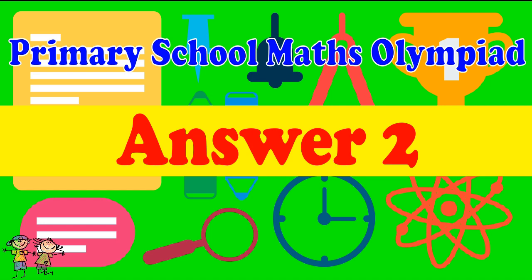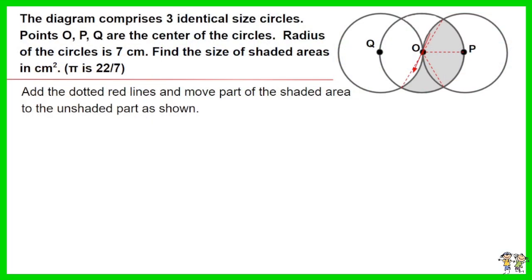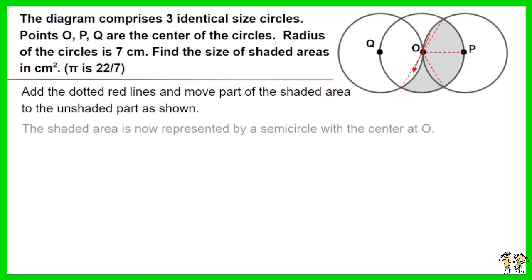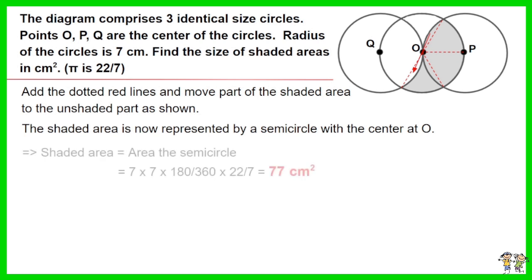Answer for Question 2. Add the dotted red lines and move part of the shaded area to the unshaded part as shown. The shaded area is now represented by a semicircle with the center at O. Shaded area = area of semicircle = 7 × 7 × (180/360) × π. The answer is 77 cm².